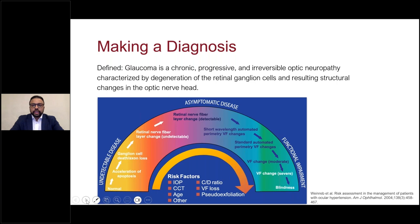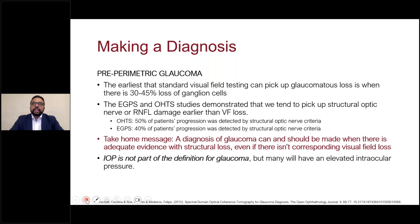Our key is to catch glaucoma as early in this continuum as possible. Technologies have certainly increased our sensitivity to detect glaucoma earlier. It's estimated we can lose up to 30 to 45% of structure before we have functional loss — so it's essential we don't wait for repeatable visual field defects before making a diagnosis. The take-home message is that a diagnosis of glaucoma can and should be made when there's adequate evidence of structural loss, even without a corresponding visual field defect.